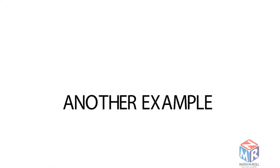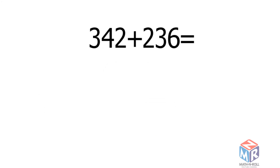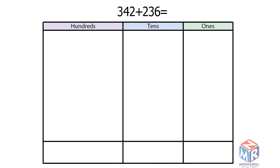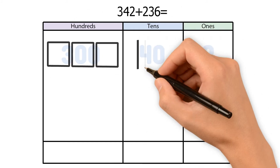Let's try another example: 342 plus 236. How do we draw it? Well, 342 has 3 hundreds, so 3 squares, 4 tens, so 4 bars, and 2 ones, so 2 circles.